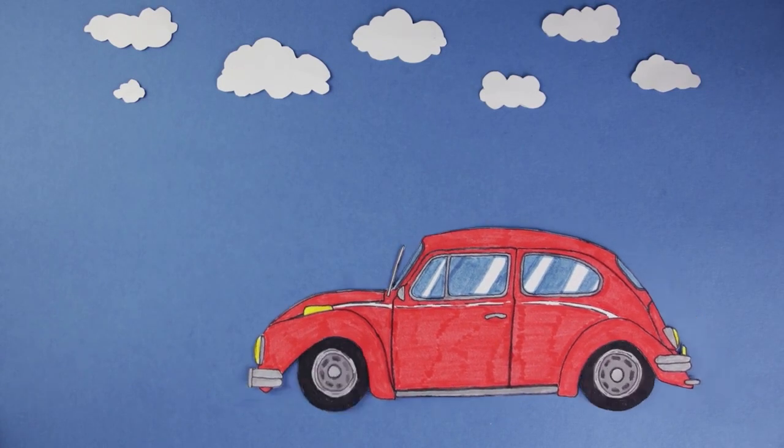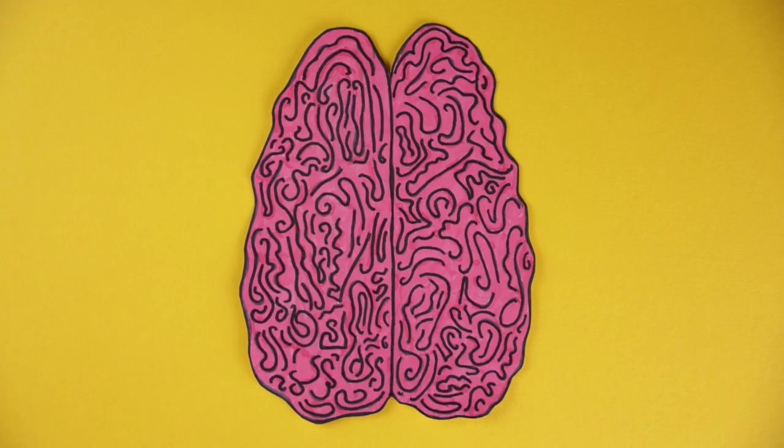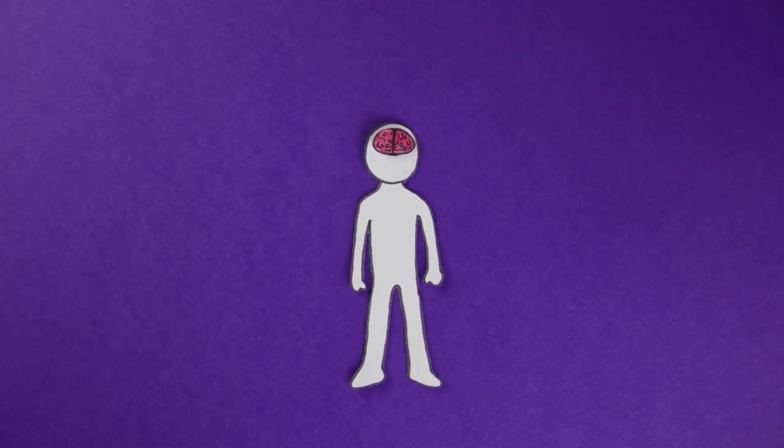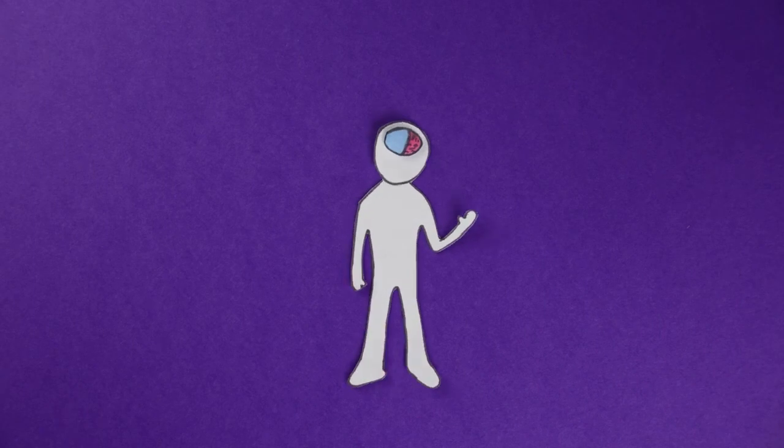Different parts of the brain do different things. The brain has two sides and they control the opposite side of your body. For example, if you lift your left arm, the right side of your brain is making it happen.